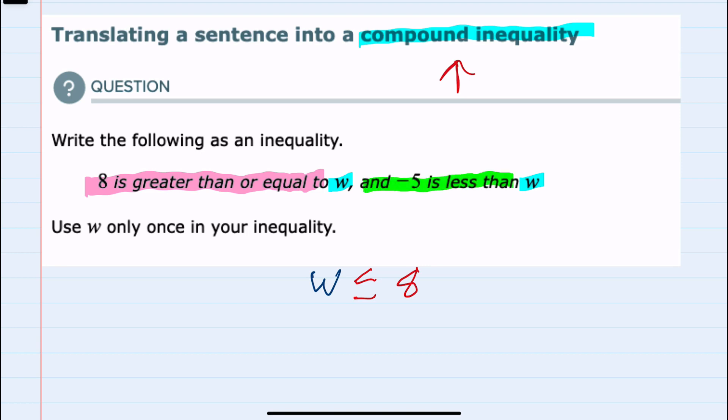And then negative 5 is less than w. So negative 5 is the smaller. Negative 5 would be on the left and it is less than w.